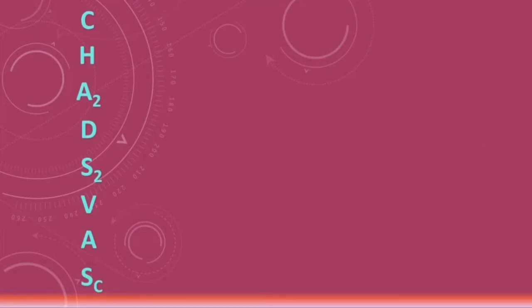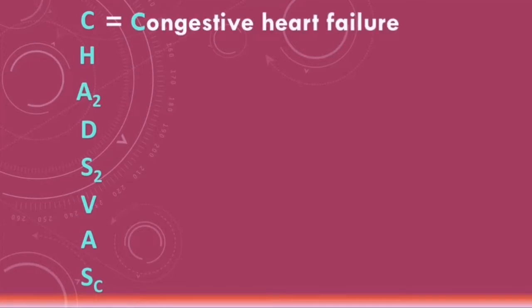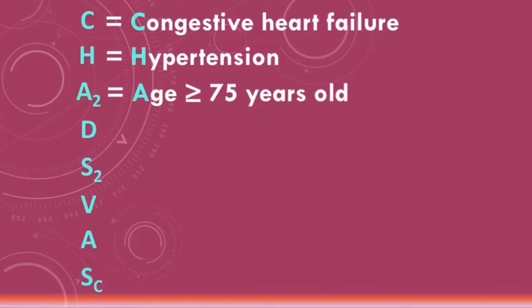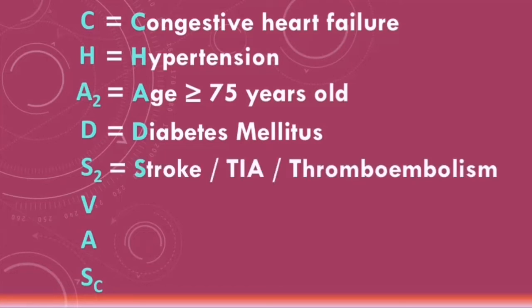The CHADS-VASc score is used in atrial fibrillation to evaluate stroke risk. Each letter stands for a particular risk factor. C stands for congestive heart failure, H for hypertension, the first A for patients equal to or older than 75 years of age, D for diabetes mellitus, and S for patients who have had a previous stroke, transient ischemic attack, or thromboembolism.